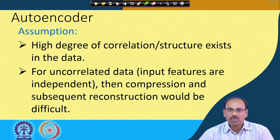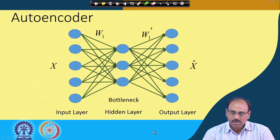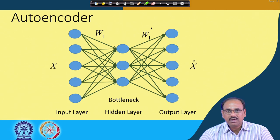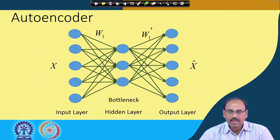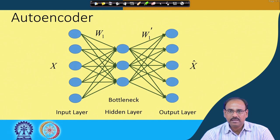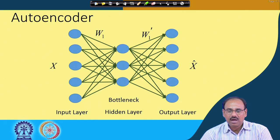The name autoencoder indicates that it encodes the data on its own, and this is an unsupervised learning because for training we do not use any labeled data. Whatever is fed to the input, the autoencoder outputs the same thing. For this I need two different functions: one is the encoding part and one is the decoding part. The encoding part encodes the input data to a compressed domain knowledge representation, and the decoder decodes from that compressed representation back to the original input. If my input was x, it will reconstruct x-hat, and I want that x and x-hat should be similar.